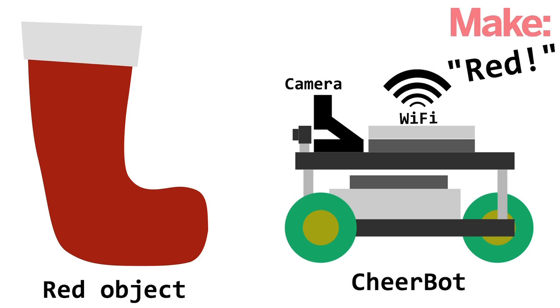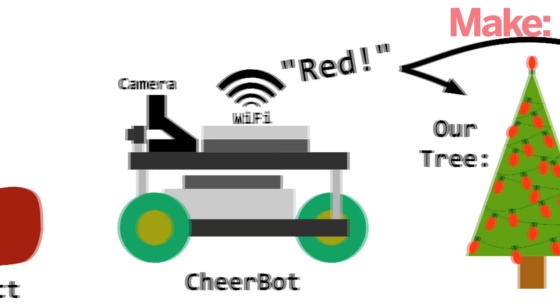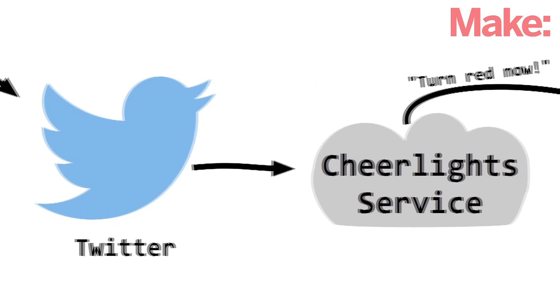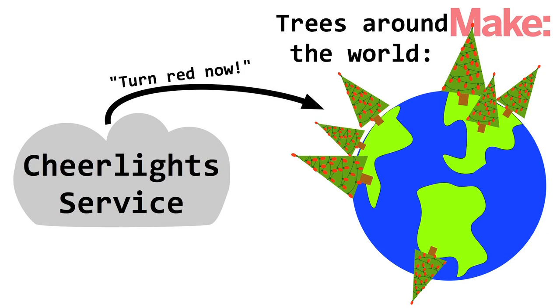To speed the domination of the world by robots, I built a robot to control the world's Christmas lights. He uses a camera to find colors, which he sends not only to my Christmas tree, but also to Twitter, and the CheerLight system, which controls cooperating light displays around the world.